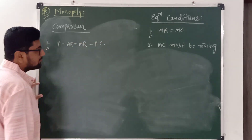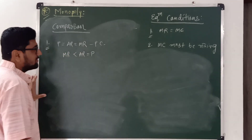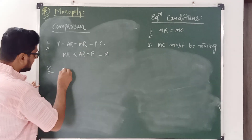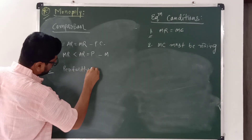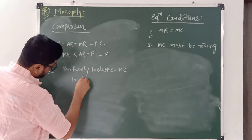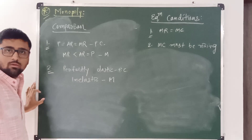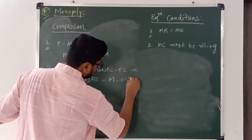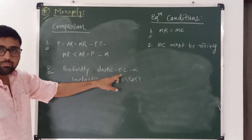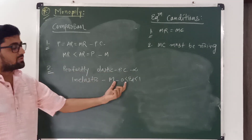In monopoly, marginal revenue is less than average revenue. Regarding demand elasticity: in perfect competition, demand is perfectly elastic, that is elasticity equals infinity; whereas in monopoly, demand is inelastic, with elasticity between 0 and 1.